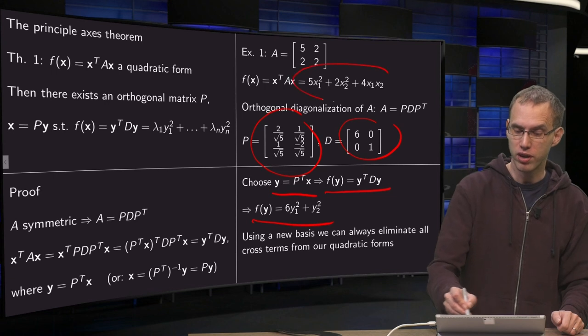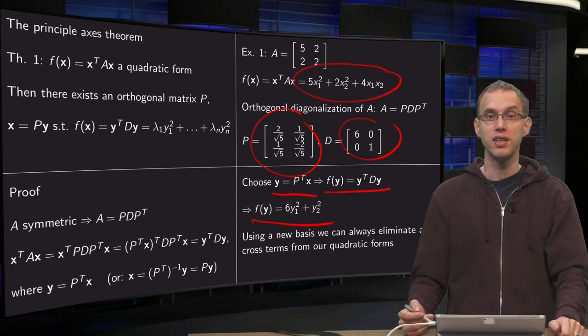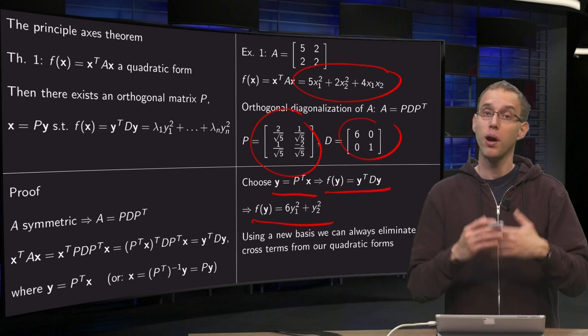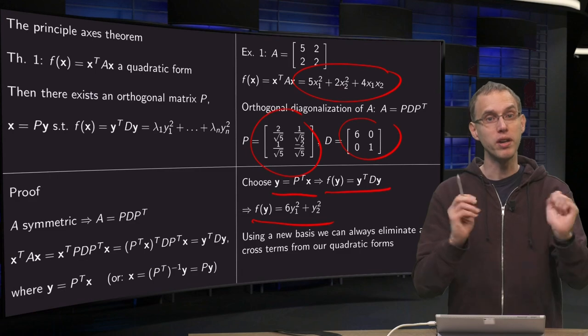So we started with a quadratic form with mixed terms, but you can always get rid of those mixed terms using an appropriate coordinate transformation, and then you are left with a quadratic form without mixed terms.